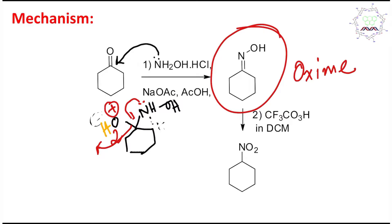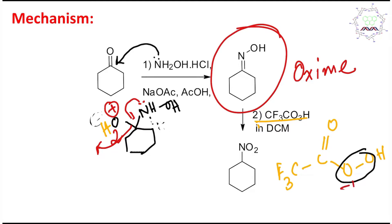In the next step, the oxime is oxidized into the corresponding nitro compound. The reagent is trifluoroperoxyacetic acid. This is a peroxy acid — the oxidation state here is −1, which is why it is oxidizing in nature. DCM is used as solvent. This oxidation happens because nitrogen has a lone pair and oxygen also has a lone pair, enabling oxidation.